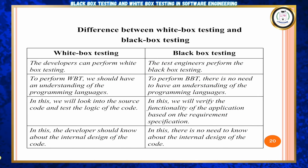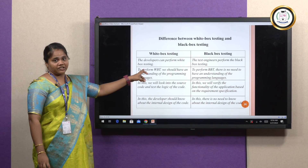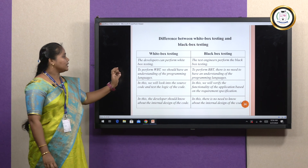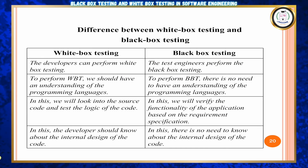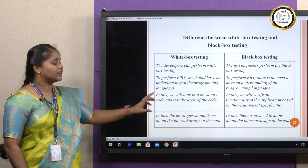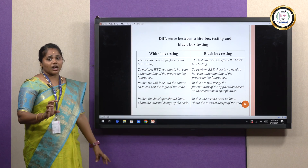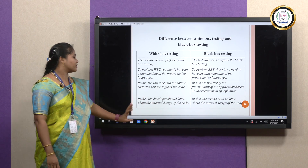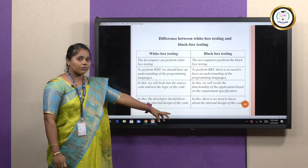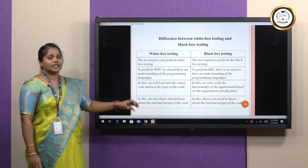Finally, the differences between white box and black box testing. White box testing is performed on the developer's side, while black box testing is done on the test engineer's side. White box testing requires understanding of the programming language; black box testing does not. White box testing looks into the code and test paths; black box testing focuses only on application functionality and requirements. In white box testing, a developer designs the internal code structure; in black box testing, no knowledge of the internal design or code structure is needed.